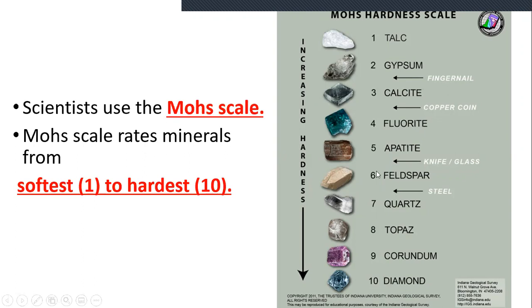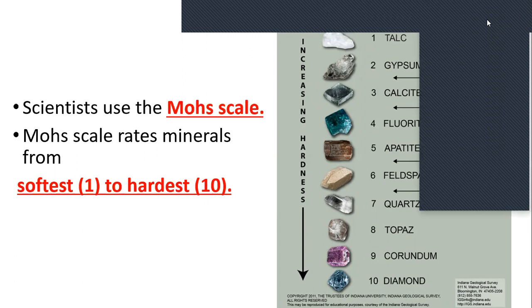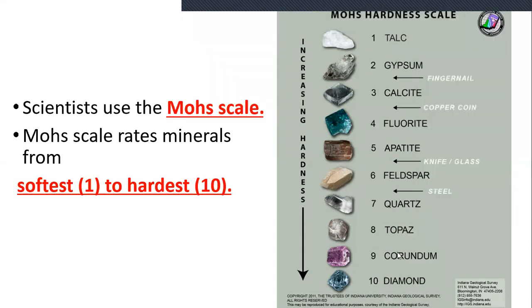The higher the mineral on the scale, the harder it is, and it can scratch anything below it. For example, feldspar can scratch both apatite and calcite because they are lower than feldspar on the scale. But feldspar cannot scratch quartz, because quartz is 7, which makes it harder than feldspar — so feldspar cannot scratch it.